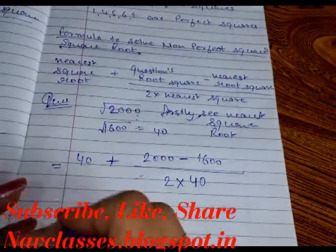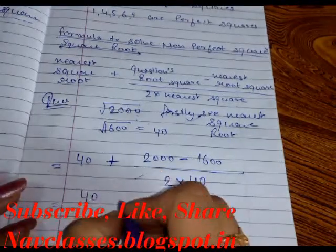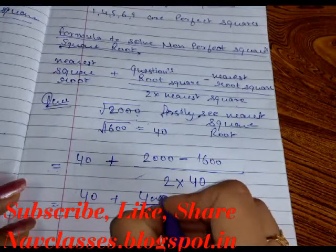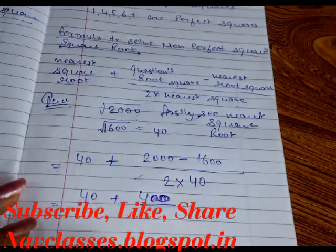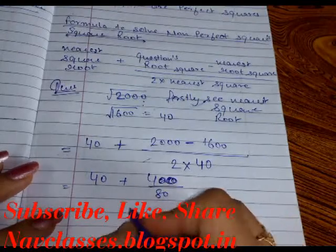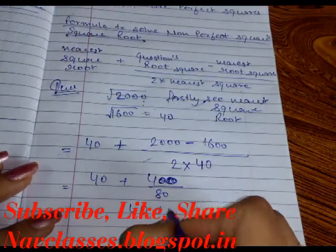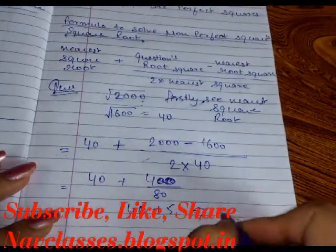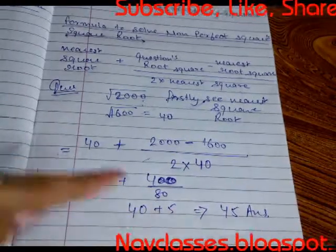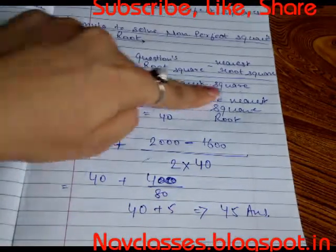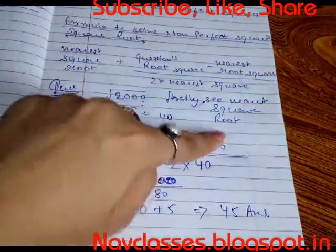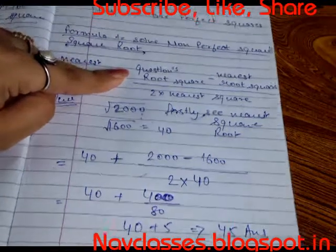After solving: 40 plus 400 divided by 80 equals 40 plus 5, which gives us 45. So the answer for the square root of 2000 is 45. In this manner you will be able to solve any question having non-perfect squares at the end, like those ending in 0.